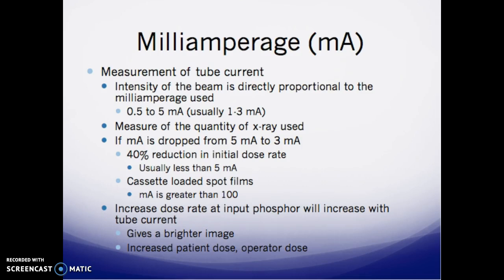If the MA is dropped from 5 MA to 3 MA, there's about a 40% reduction in the initial dose rate. With cassette-loaded spot films during fluoro, the MA is greater than 100. Increasing dose rate at the input phosphor will increase with the tube current, giving a brighter image, but it also increases the patient dose and the operator dose.